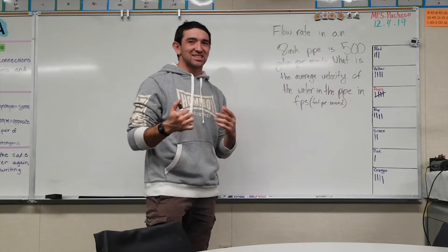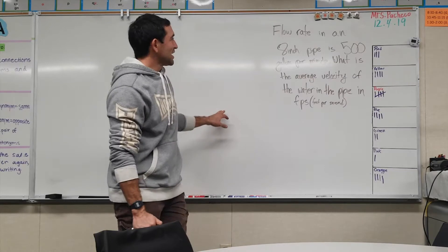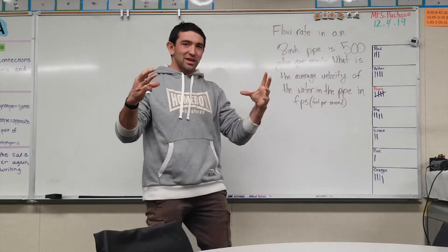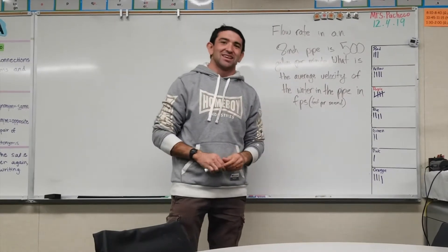This is flow rate where they only give you the diameter of the pipe and the gallons per minute, and you have to figure out feet per second.